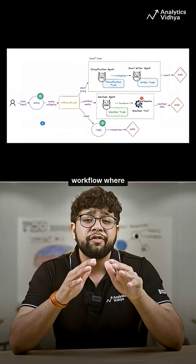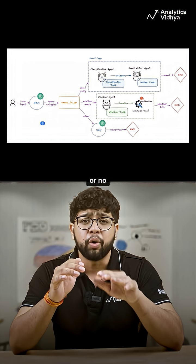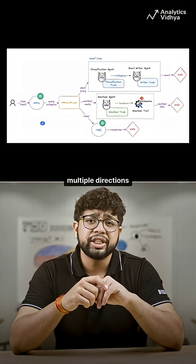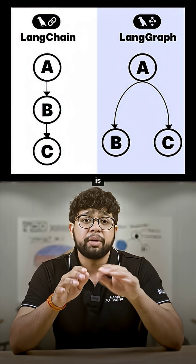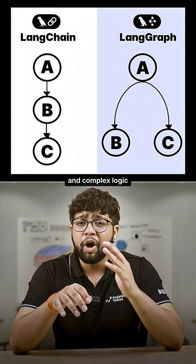Imagine building an AI workflow where decisions are not just yes or no—they can branch in multiple directions and even revisit earlier steps if needed. LangChain is all about sequences while LangGraph is about flexibility, conditions, and complex logic.